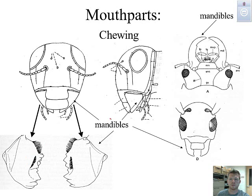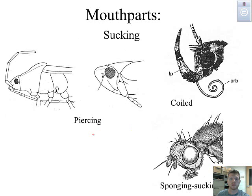Some organisms have mandibles, which are the chewing mouth parts — that's a dead giveaway. If we see those, it can lead us to identifying that order. Or maybe they have various parts like piercing mouth parts, coiled mouth parts called a proboscis, or spongy and sucking mouth parts, kind of like a fly.